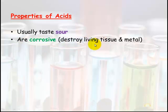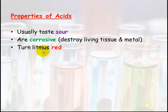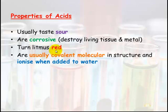Properties of acids: they usually taste sour, they are corrosive — in other words they can destroy living tissue and metal. They will eat through any form of living tissue such as skin or flesh, as well as things like wood and metal. Acids turn litmus paper red; litmus is an indicator paper, and acids will turn either blue or red litmus red.